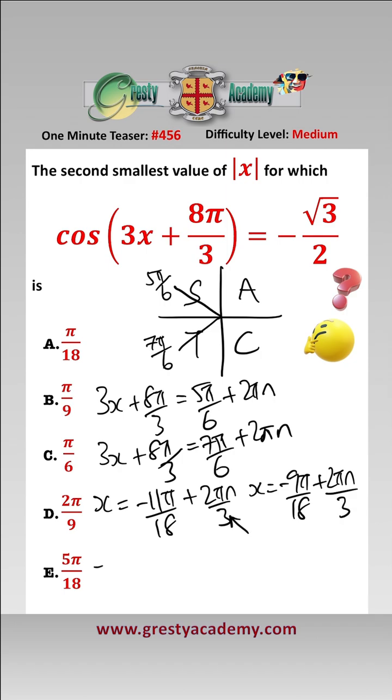first of all into this one, put n equals 0 gives a solution of minus 11 pi over 18, n equals 1 gives a solution of pi over 18, n equals 2 gives a solution of 13 pi over 18, and putting n equals 0, 1 and 2 in here,